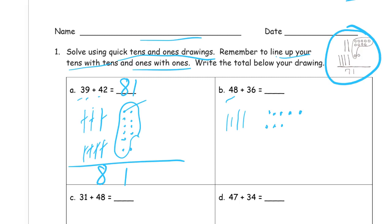And for 32 I need three tens — one, two, three — and six ones: one, two, three, four, five, six. Let me see if I can make a ten out of the ones that I have. And I can, because this eight only needs two of these here, so I'm going to loop those in for a ten. And now I just count all my tens.